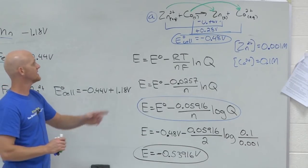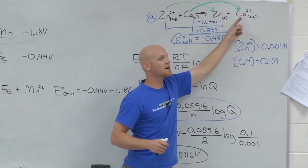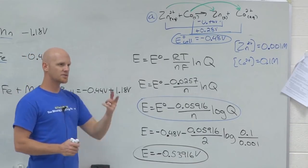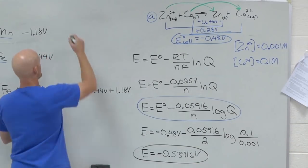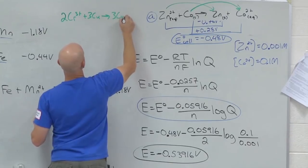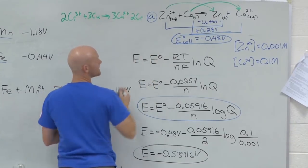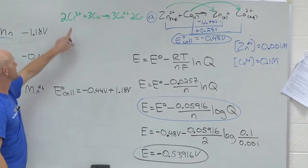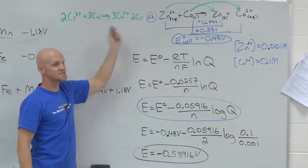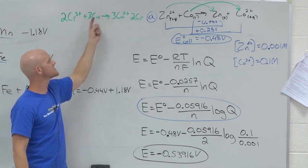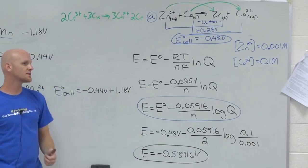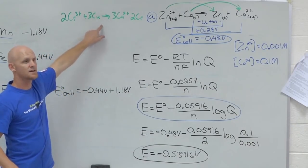N is moles of electrons transferred in the balanced reaction. Here, two electrons gained and two electrons lost equals two moles of electrons transferred. For example, in the reaction 2Cr³⁺ + 3Cu → 3Cu²⁺ + 2Cr: for chromium 3+ to chromium, with two of them it's six electrons total. For copper going to copper 2+, three of them means six electrons as well — six electrons gained, six electrons lost. So N would be six for that reaction.